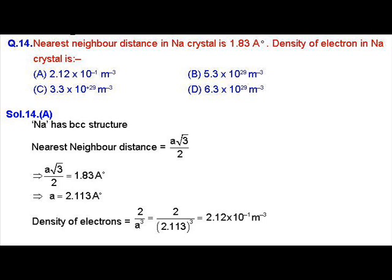The density of electrons in the crystal is being asked to calculate. Now we know that sodium has BCC structure, so the nearest neighbor distance in BCC crystal is √3 a/2, which is given to us as 1.83 angstroms. So we can calculate a, the lattice length, from this expression.